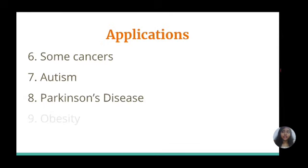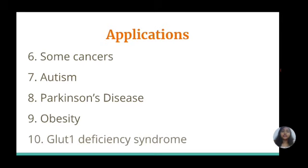The next few applications of ketogenic diet include treating cancer, autism, Parkinson's disease, obesity, and gluten deficiency syndrome. Animal and human research suggests that ketogenic diets may benefit people with certain cancers when combined with other therapies, although it may not have a significant impact on disease progression in advanced and terminal cancers. The ketogenic diet has been shown to be safe in these patients and potentially improve quality of life.